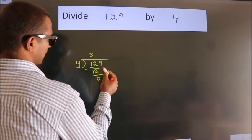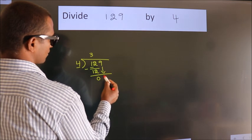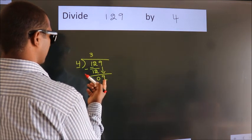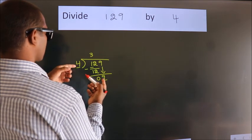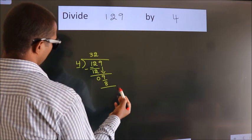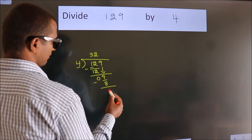After this, bring down the beside number, so 9 down. A number close to 9 in the 4 table is 4 times 2 equals 8. Now we subtract and get 1.